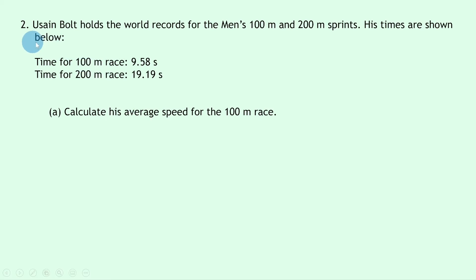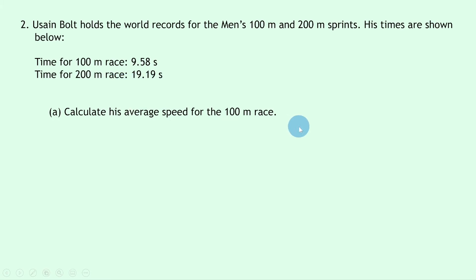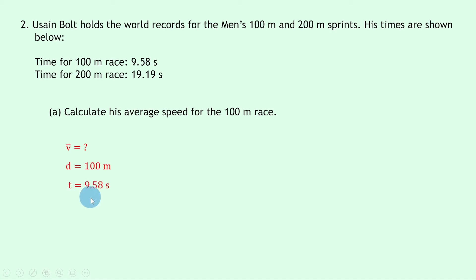Question two says: Usain Bolt holds the world records for the men's 100 meter and 200 meter sprints. His times are shown below — his time for the 100 meter race was 9.58 seconds, and his time for the 200 meter race was 19.19 seconds. Part a says to calculate his average speed for the 100 meter race. Writing down what we know: we're trying to find v-bar the average speed, the distance is 100 meters, and the time is 9.58 seconds.